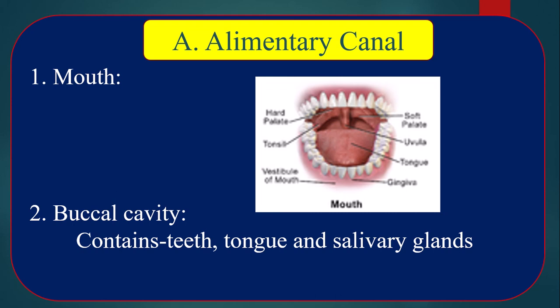Salivary juice secreted from the salivary glands contains mucin, which makes food slippery and helps in swallowing. The secretion also contains enzymes named ptyalin and maltase, which take part in digestion.